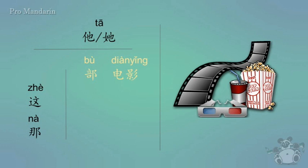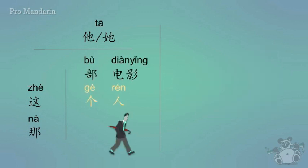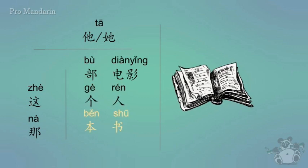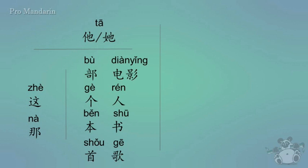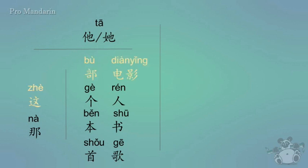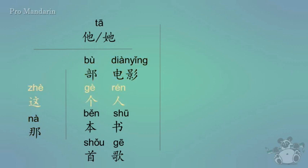The next piece of vocabulary is rén, which means person. As you can see, it looks like a person walking. The classifier for it is gè — this is the default classifier. Then the next word is shū, which means book, and běn is the classifier for that. The last one is gē, which is song, and shǒu is the classifier for that. So zhè bù diàn is this movie. Nà bù diàn is that movie. Zhè gè rén is this person, and nà gè rén is that person.